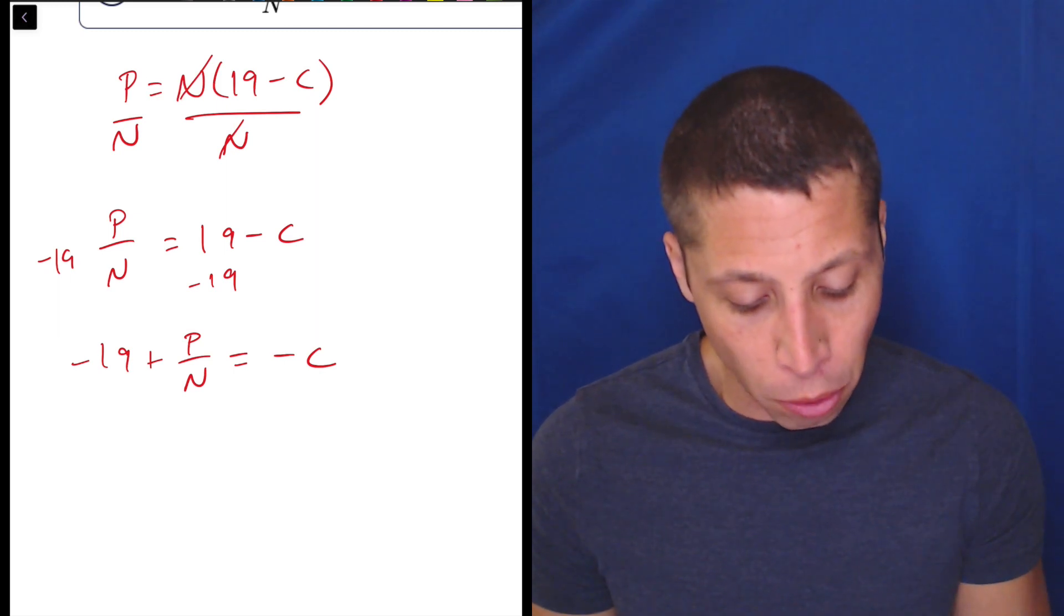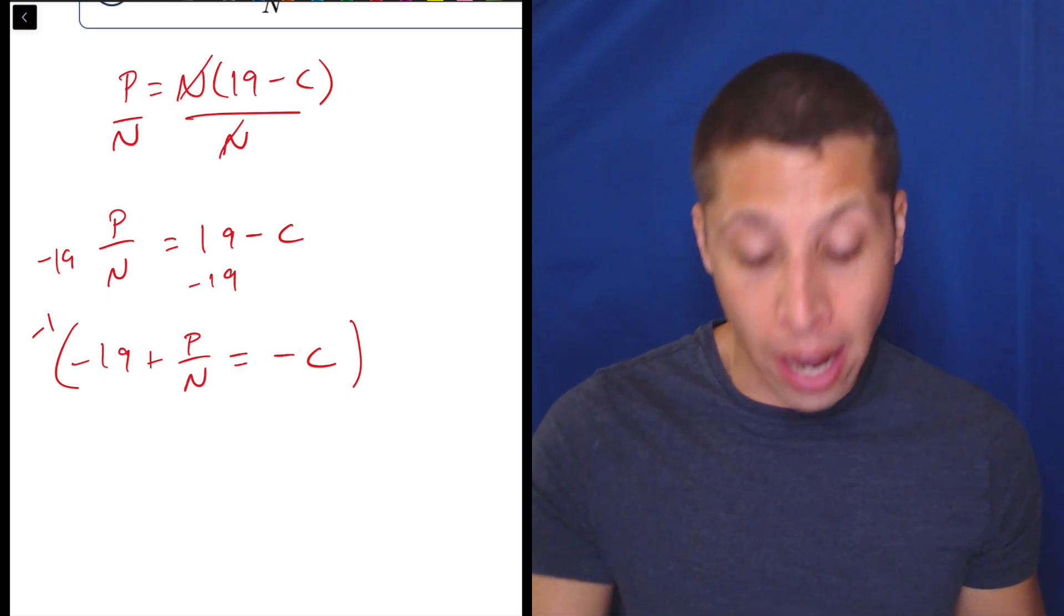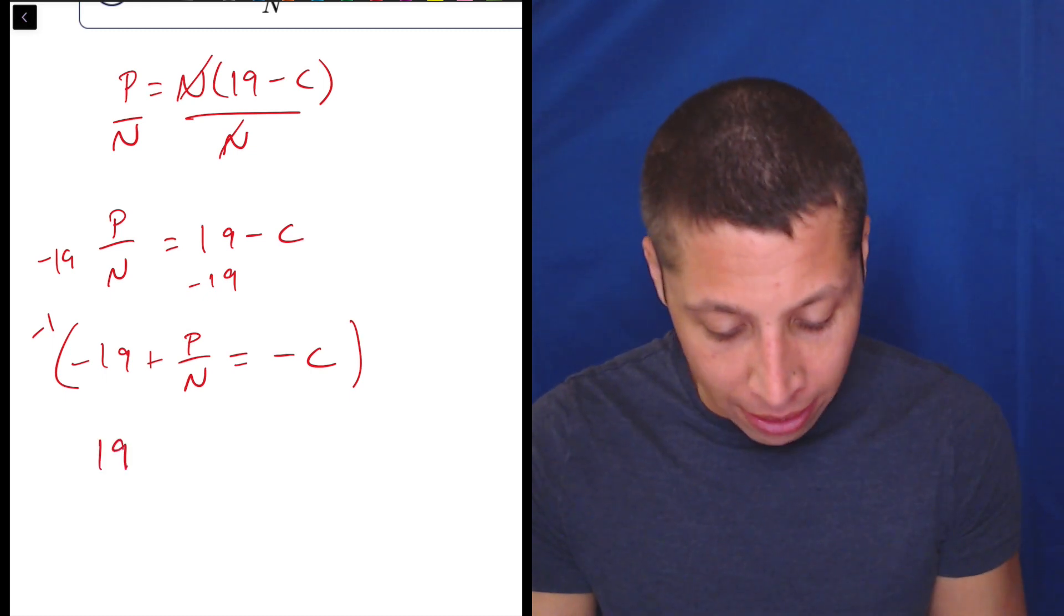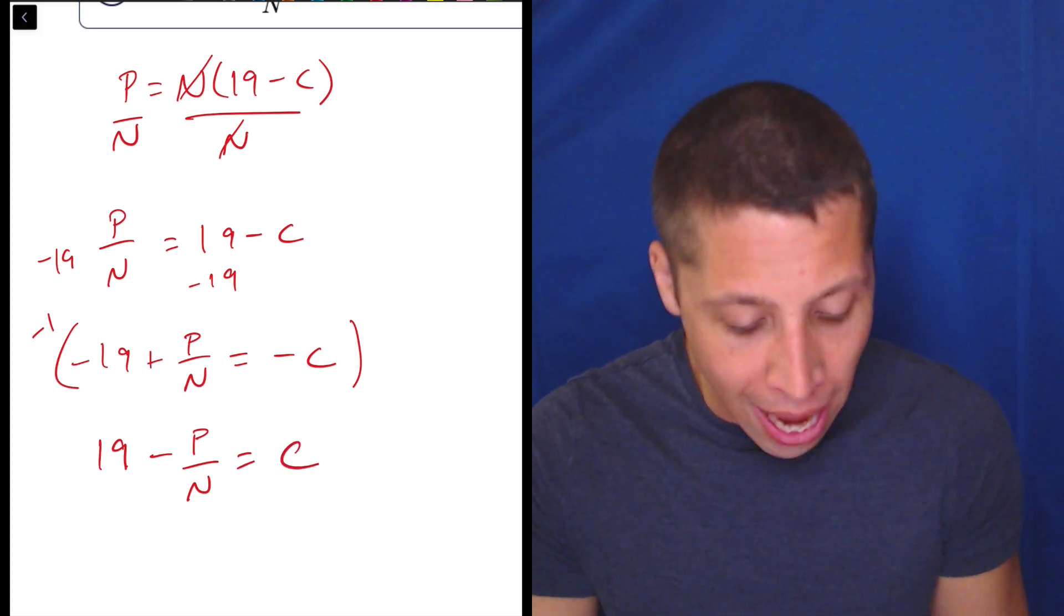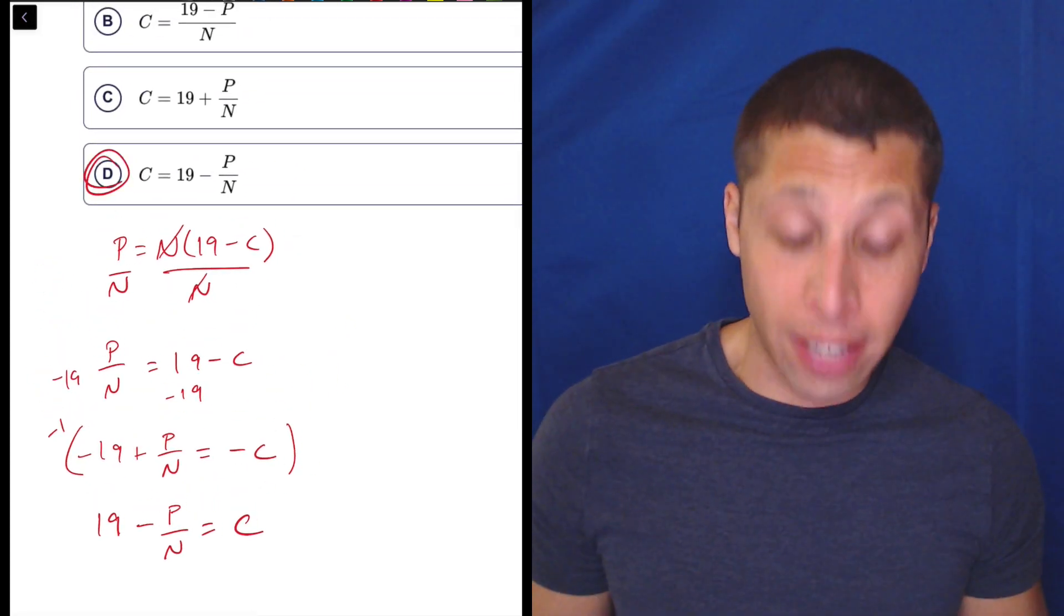So what we could do is just multiply this entire equation by negative one. That's going to flip the sign of everything. So that would be 19 minus P over N equals now positive C. And so there we go. That is an answer choice and that is the correct answer.